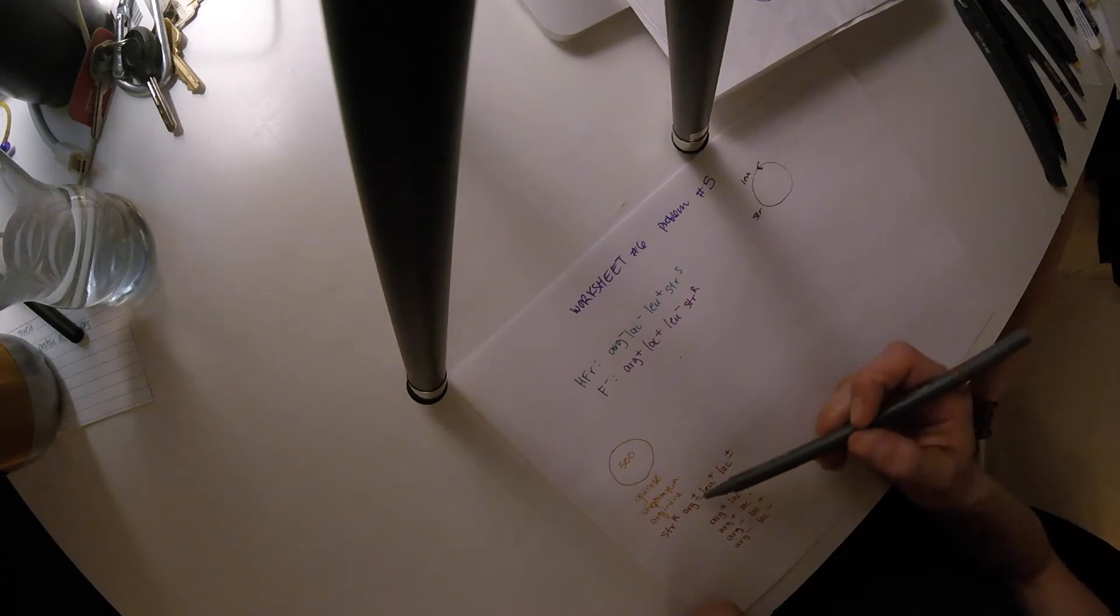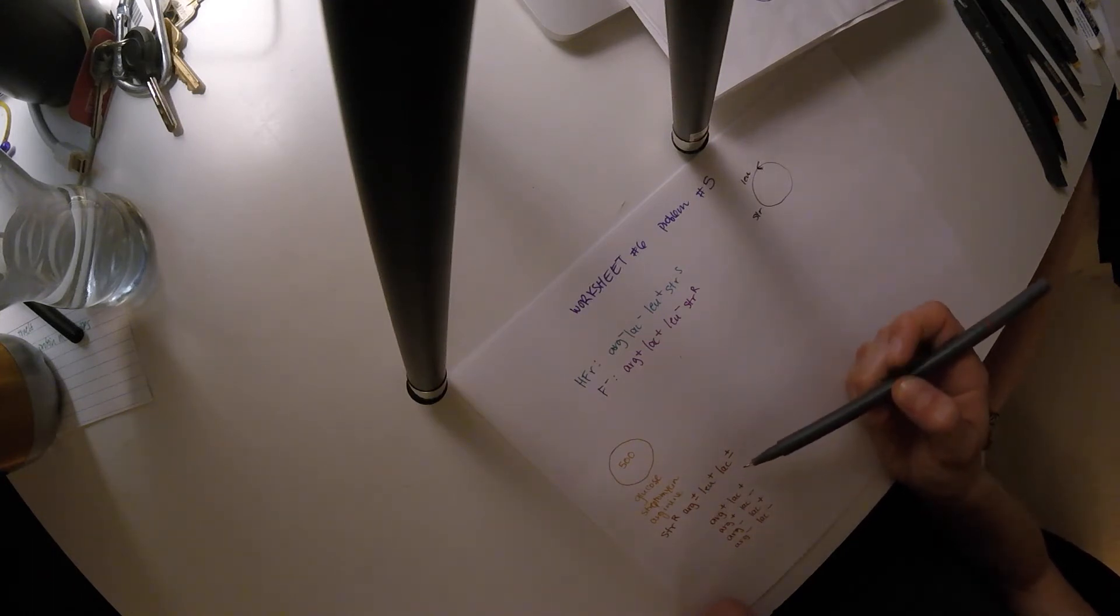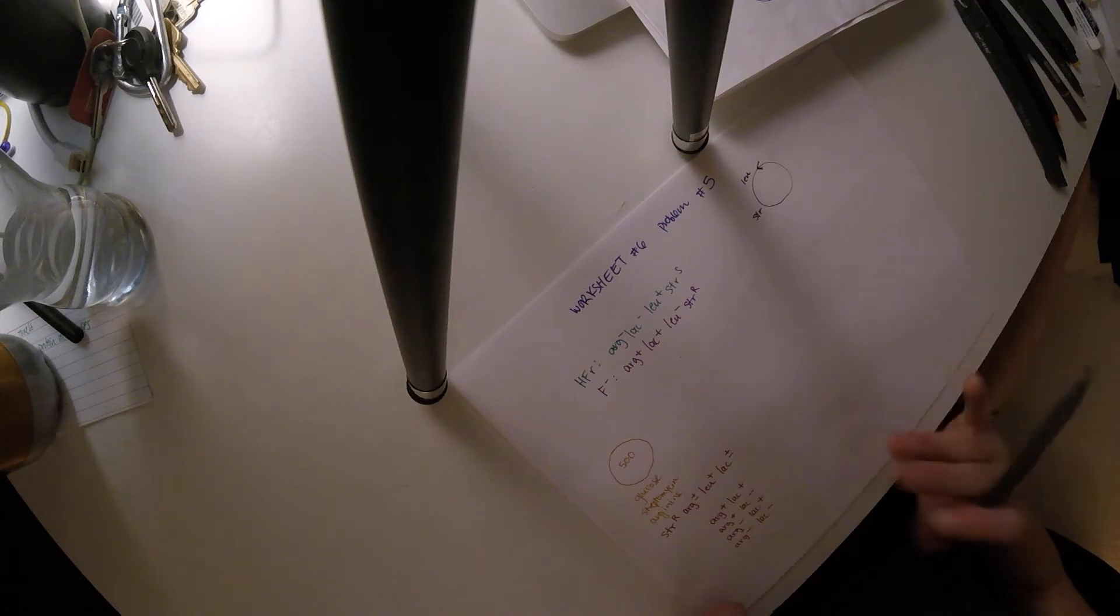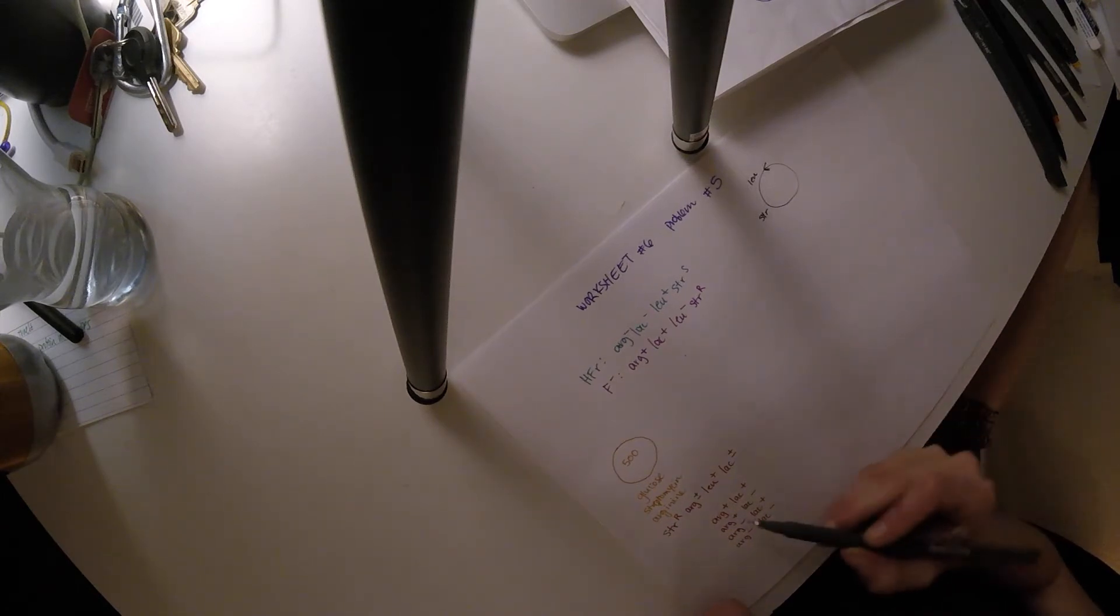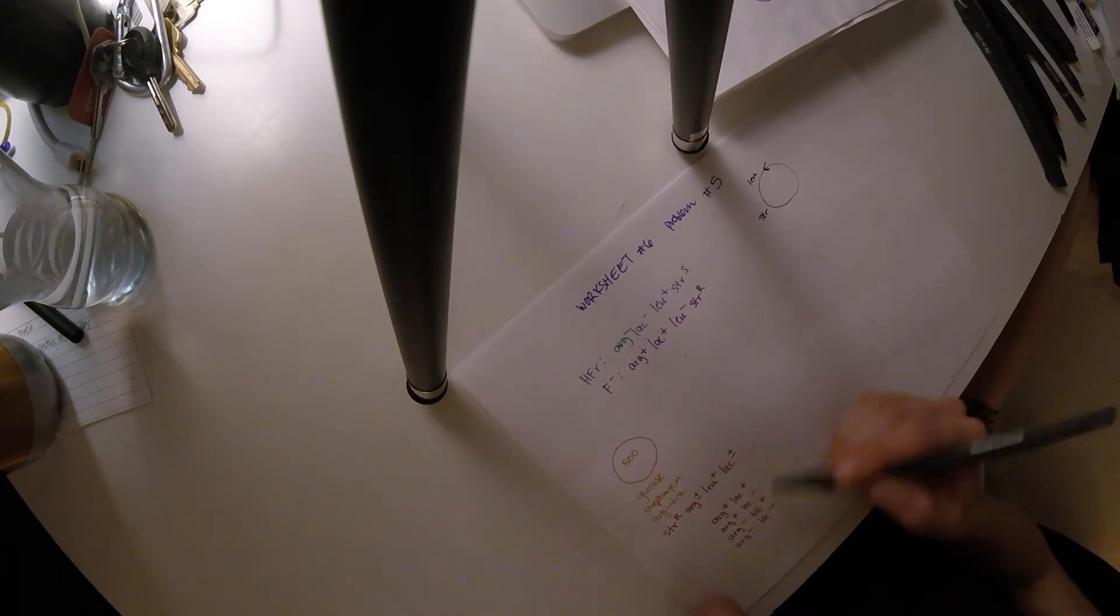So now we need to figure out Arg plus and Arg plus minus with Lac plus minus. So just write out all of the different genotypes that those two can have together. So all I did was say, if I can be either plus or minus with Arg and plus or minus with Lac, that means I have four potential genotypes, and they are plus plus, plus minus, minus plus, minus minus. So that's all I did right here. I'm not doing anything with this information yet. I just am writing it off to the side.